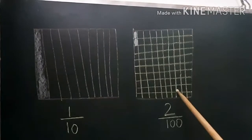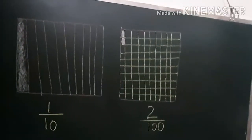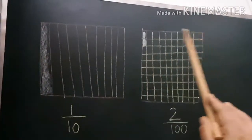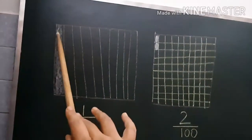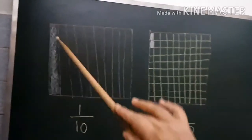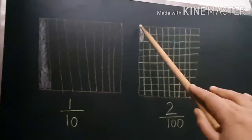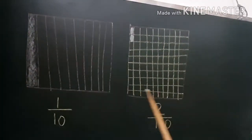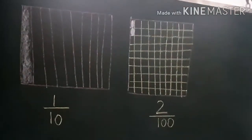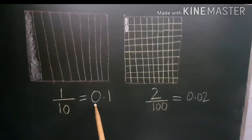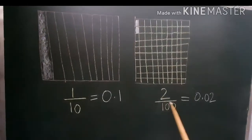Let us understand decimals more using figures. As I said, decimals are fractions with ten, hundred, or thousand as the denominator, so they divide a whole into 10, 100, or 1000 equal parts. Here I take a box divided into 10 equal parts with one part shaded — its fraction is 1 by 10. In another box there is a grid of 100 small boxes with two shaded — its fraction is 2 by 100.